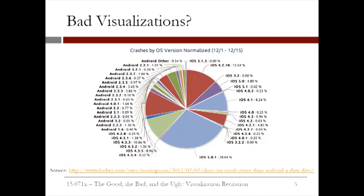There are many things wrong with this plot, but let's break down exactly what. Putting aside for a moment that there are far too many labels, check out the ordering of the labels corresponding to iOS. Two sensible ways of ordering iOS data might be by decreasing percentage or by version number. Instead, we start at the top with iOS 3.13 at 0%, then jump to iOS 4.2.10 with 12.64%, before going back down to iOS 3.2 with 0.00% again.